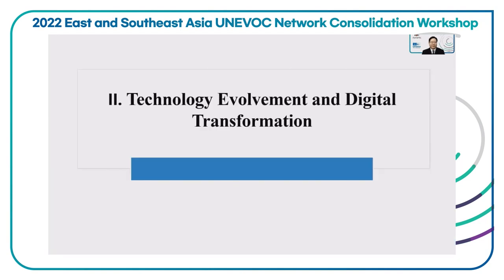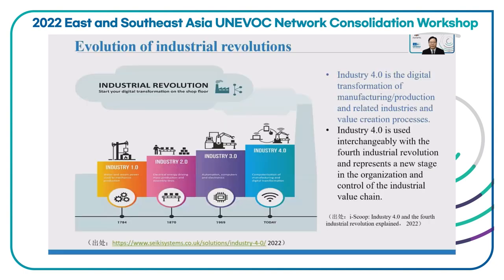Now let's see the second part: technology involvement and digital transformation. We are all familiar with Industry 4.0. Actually, the evolution of Industry 1, 2, 3, 4 follows the logic of technology involvement. So for Industry 4.0, it represents the digital transformation of manufacturing and production.